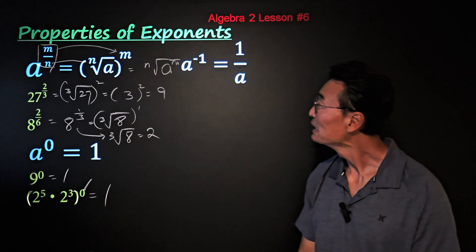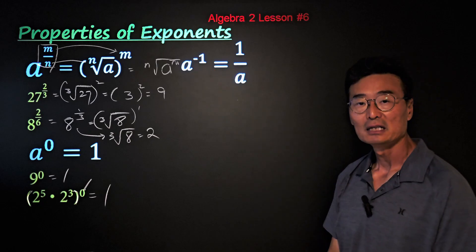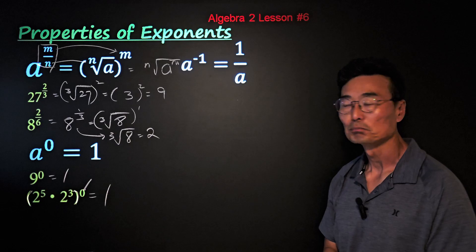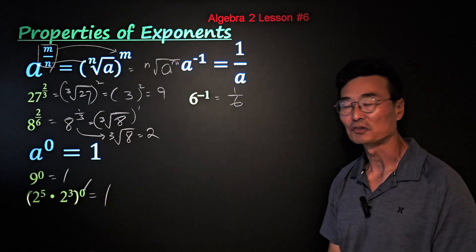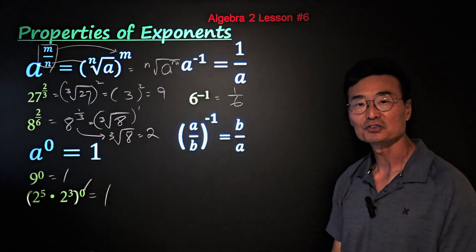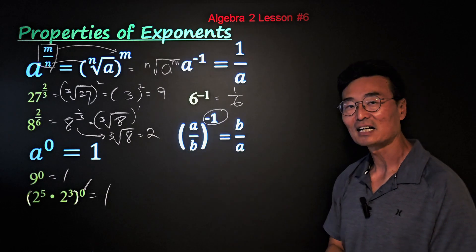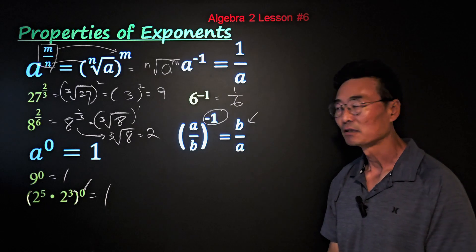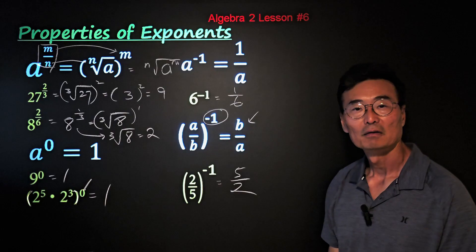Here's our third rule: a negative exponent. If we have 8 to the negative 1 power, we change that into 1 over a, because the reciprocal of a is 1 over a. For example, 6 to the negative 1 power equals 1 over 6. A variation is a over b to the negative 1 power — we simply flip what's inside the parentheses, taking its reciprocal, which gives b over a. So 2 over 5 to the negative 1 power is simply 5 over 2.